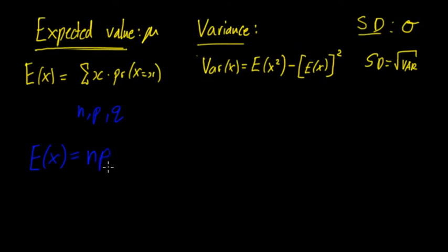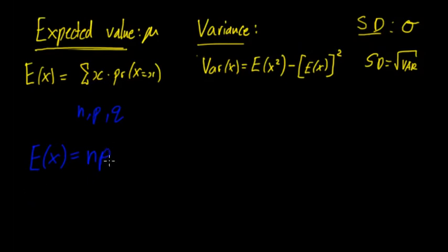If you watched the video about graphical representations you'll see this is how I calculated the expected value. What happens is you multiply the number of trials by the probability of success. This makes logical sense — if you had 10 trials and the probability of success was 30%, then your expected number would be 10 × 0.3 = 3. So that's really useful.